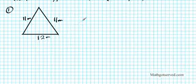So we want to find out the area. First thing you want to do is you want to identify A, B, and C. So A, let's call A 11, let's call B 12, and let's call C 11. Doesn't really matter how you label it.